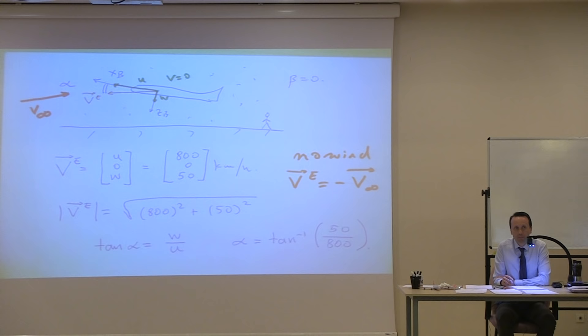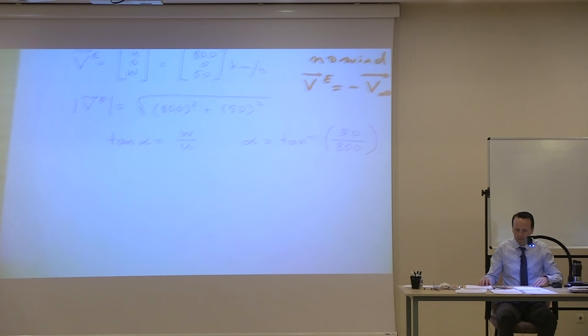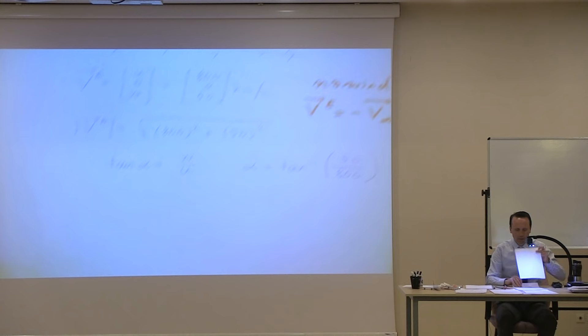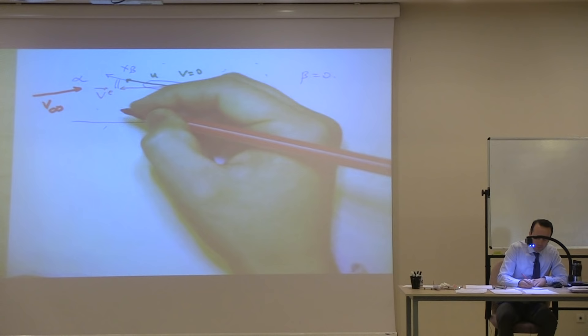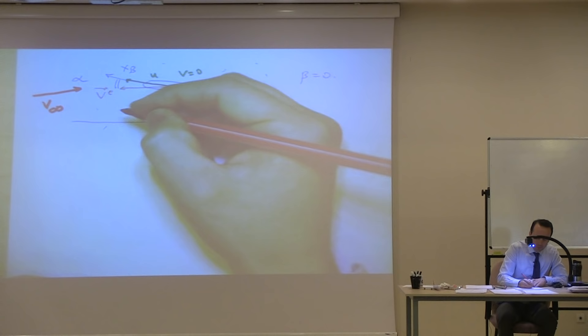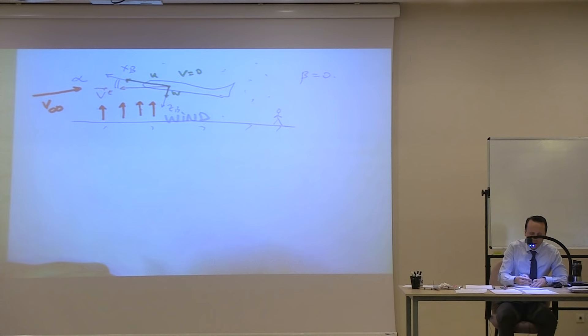So tangent(alpha) = W/U follows from that. Now take the same picture and say that there is some air blowing from the bottom up — like an upwind. That's a wind blowing from below to up.